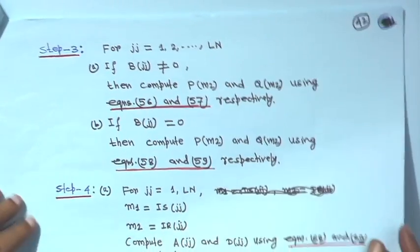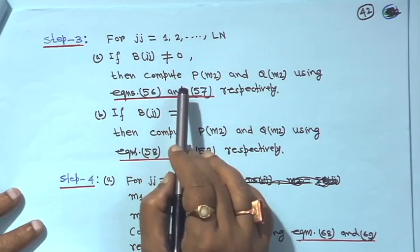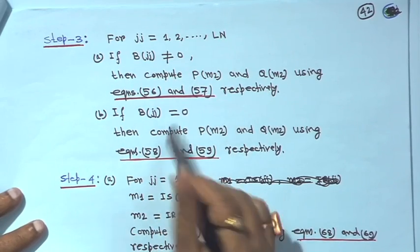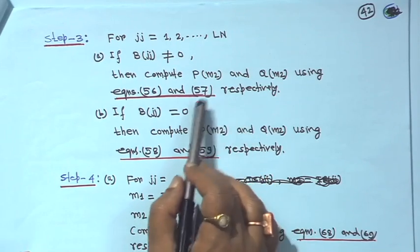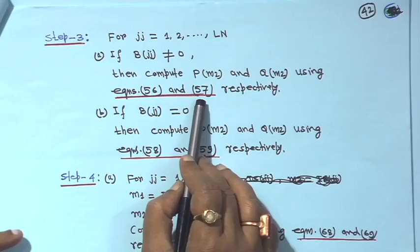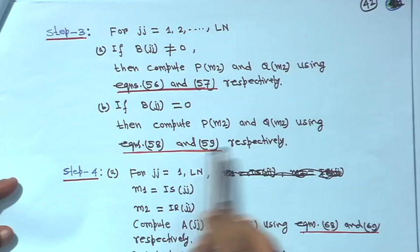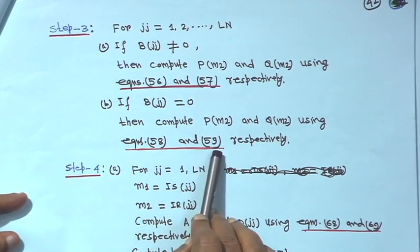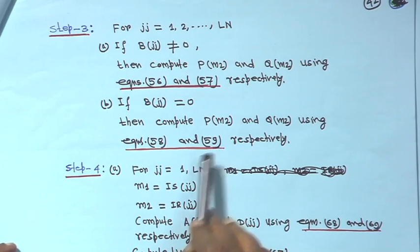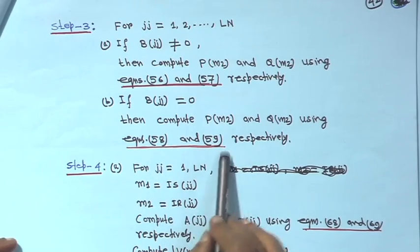Step 3: for jj equals 1 to LN, if B jj is not equal to 0, compute PM2 and QM2 using equations 56 and 57 respectively — these include the last term in those branch equations. If B jj equals 0, compute PM2 and QM2 using equations 58 and 59 respectively. Equations 58 and 59 are a single term written in sigma form.